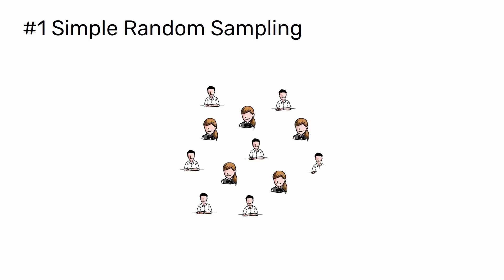1. Simple random sampling. When you're using a simple random sample, every member of the population has an equal chance of being selected. Your sampling frame should include the whole population.